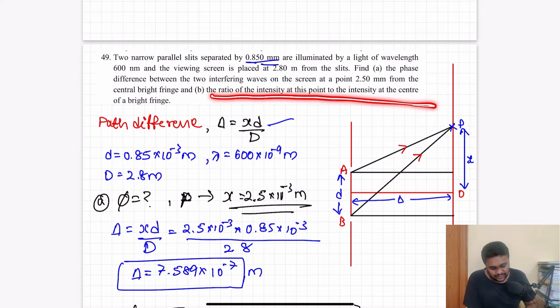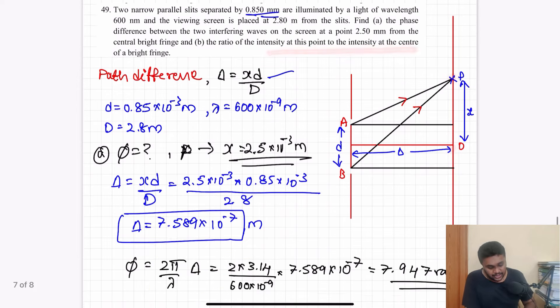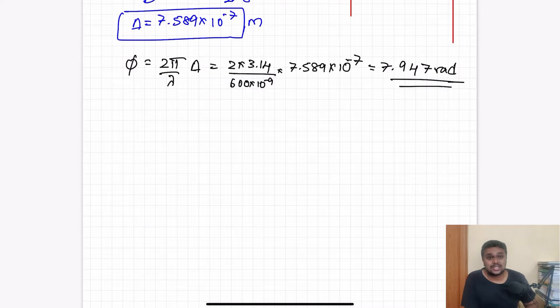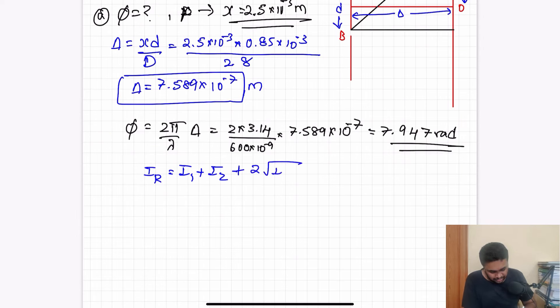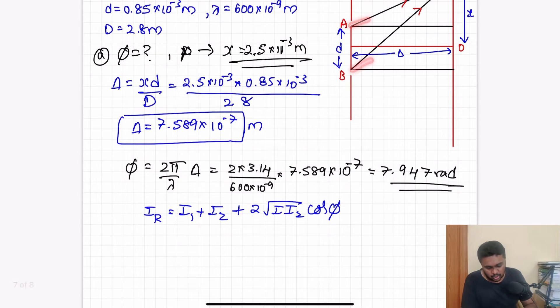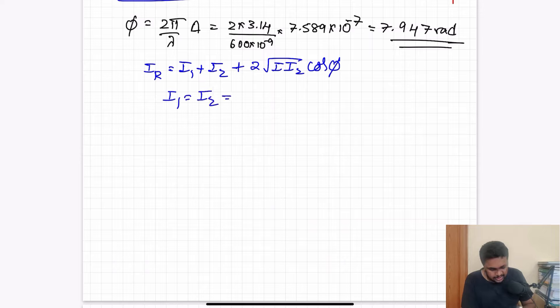Part B, ratio of intensities at the point to that of the intensity at the center. So centrally intensity is maximum. The resultant intensity I will be equal to i1 plus i2, where i1 is the intensity of this ray, i2 is the intensity of this ray. Resultant intensity, plus 2 into root of i1 i2 cos phi.